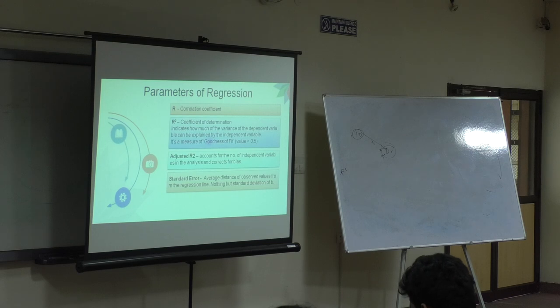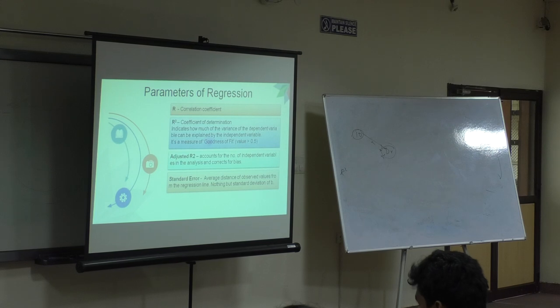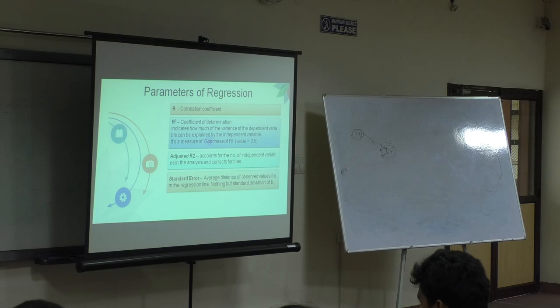Standard error. This is the standard deviation of B. B is our slope. It's the standard deviation of B. What does that mean? It is the standard deviation of my residuals. That's what it means. We have already discussed this - the distance between the predicted value and your observed value.